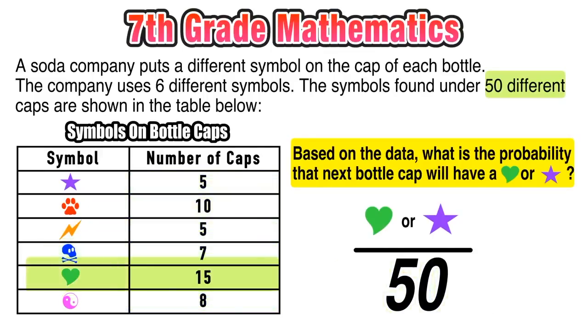Now for the green heart, we know that occurred 15 times out of the 50. And for the purple star, that symbol occurred five times out of the 50.